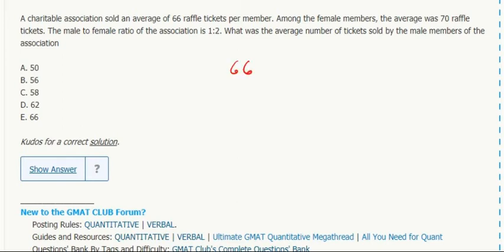So, 66 raffle tickets overall, the females were 70, and the males we don't know but here they give us the ratio of male to female is one to two.